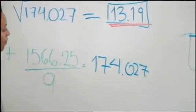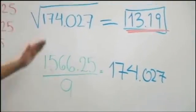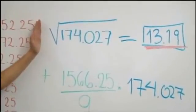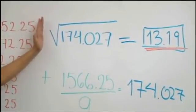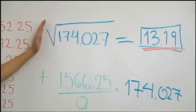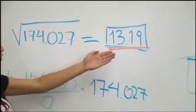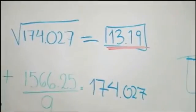Now we take the square root of 174.027, which gives us 13.19. This is the standard deviation.